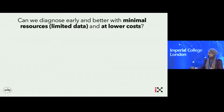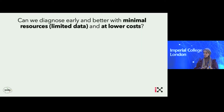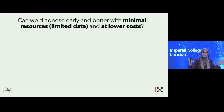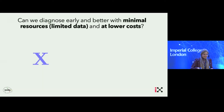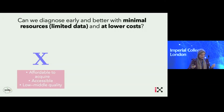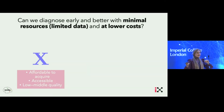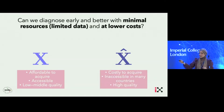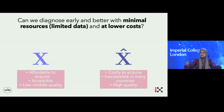Here is the question I'm throwing at you: can we diagnose early and better with limited resources and at lower costs? It's a big question. Given input data X that is affordable to acquire and accessible, even if it has low to middle quality, we want to design a neuro AI model that is able to predict an X-hat — which is costly to acquire, inaccessible in many countries and clinical facilities, but is of high quality.